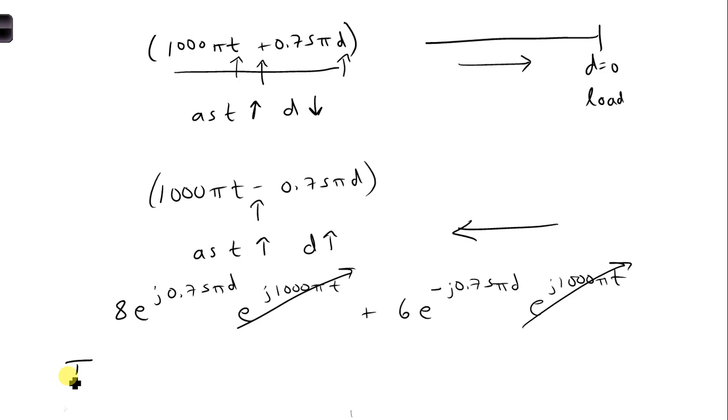That means our current phasor, we write our current with a tilde over it, and it's also only a function of d. We don't have time anymore. It is 8e^(j0.75πd) plus 6e^(-j0.75πd).